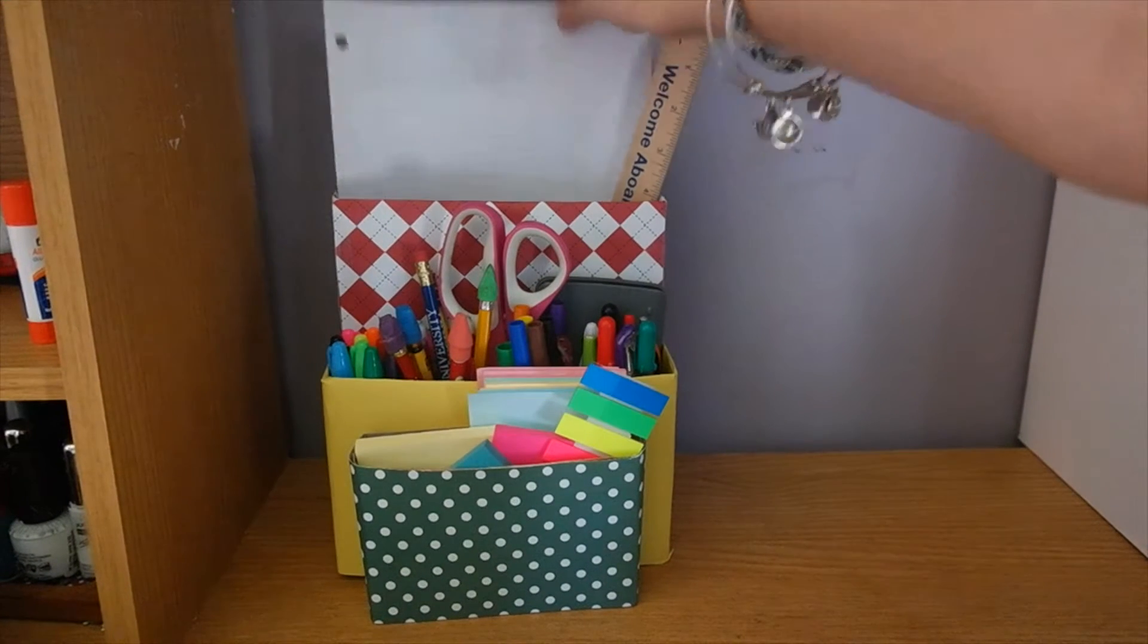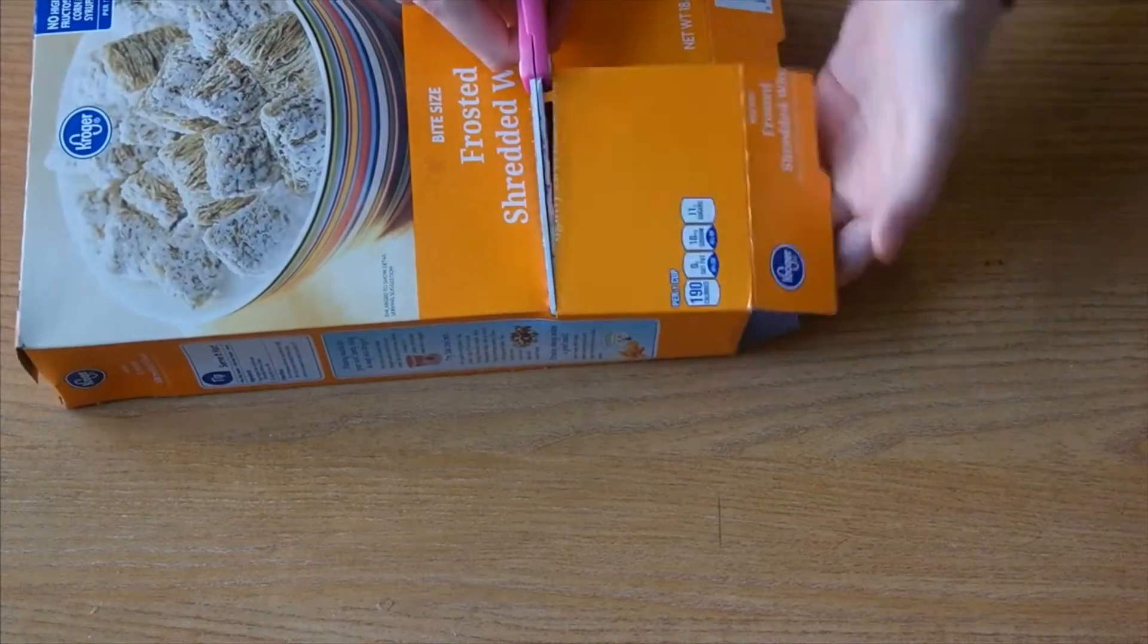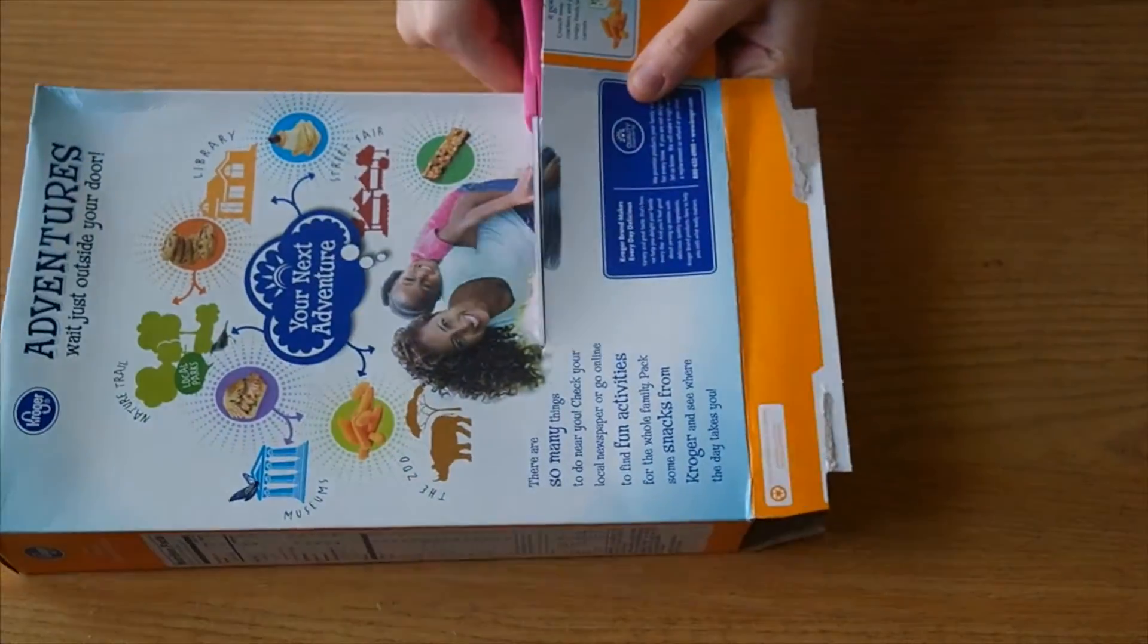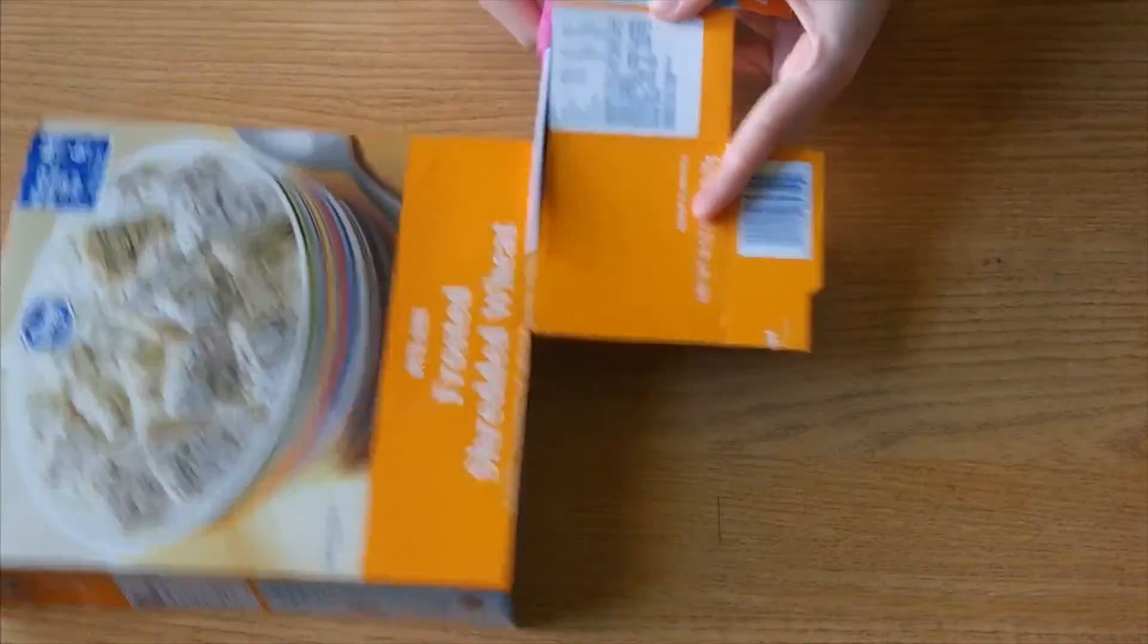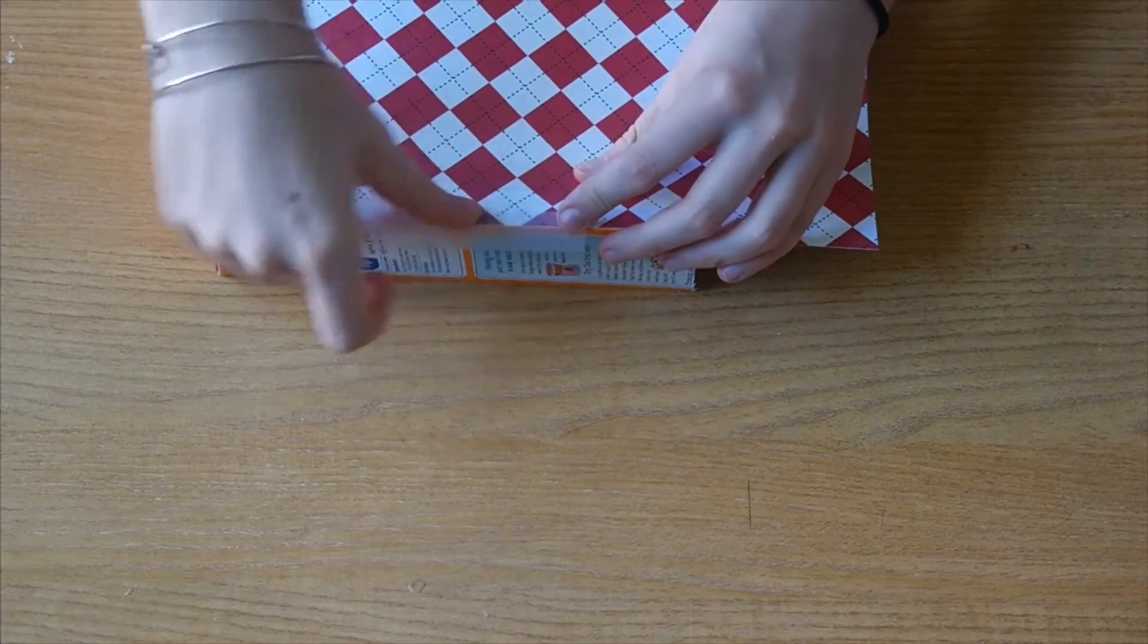The first idea is this school supply desk organizer. Take any old cardboard box, I'm using a cereal box, and cut off the top of it to whatever height you'd like. Make sure the bottom of the box is closed and the top is open. Now you can decorate your box however you want.